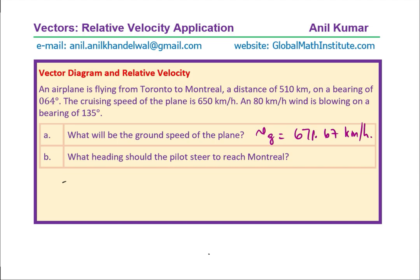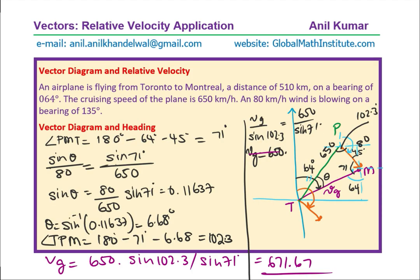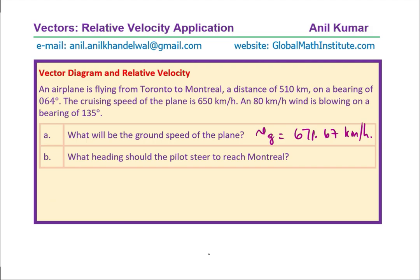Part B: what heading should the plane steer to reach Montreal? Going back to our diagram, the heading is 64 minus theta. Since theta is 6.68 degrees, the heading is 64 minus 6.68, which gives us 57.32 degrees. So the heading will be at a bearing of 57.32 degrees.